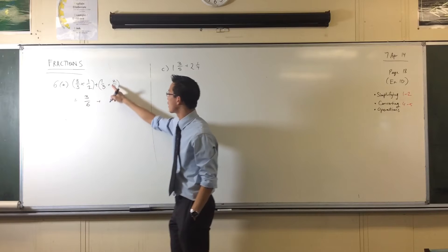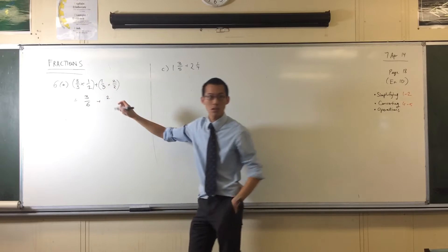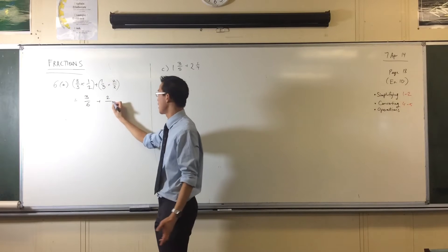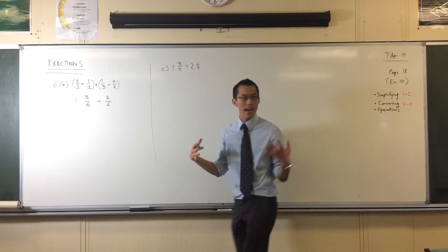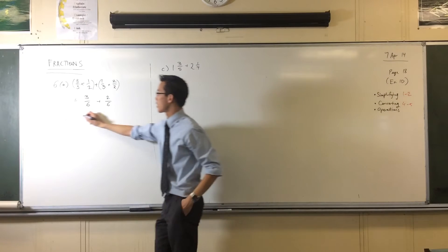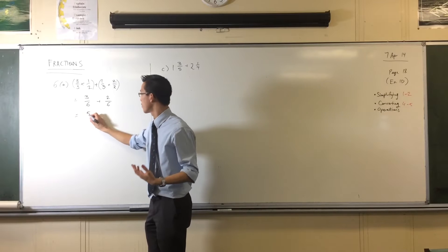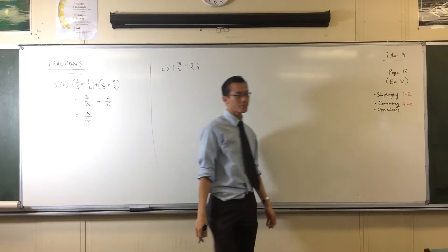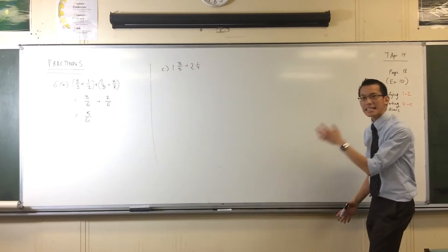And over here, I'm going to get one times two, which is two, over six again. And now these guys have a common denominator, so they can fit together. Three plus two, of course, is five, and there you go. So that's how you put them together.